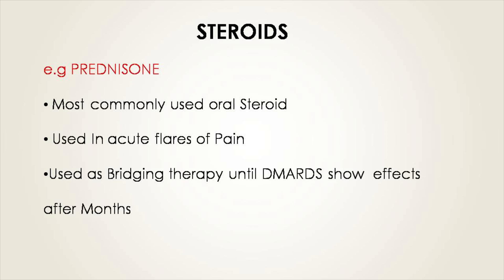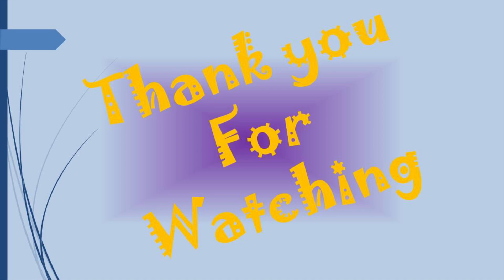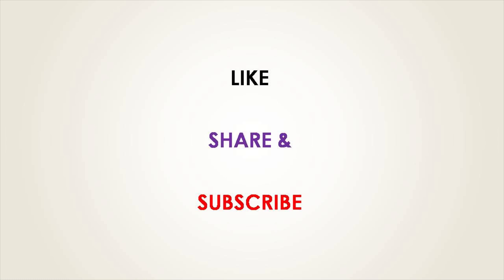For steroids, prednisone is the most commonly used oral steroid. It is given to treat acute flares of pain. Steroids are used as a bridging therapy and are particularly useful when introducing DMARDs, which take several months to take effect. We give steroids initially before the actual effect of DMARD therapy begins.